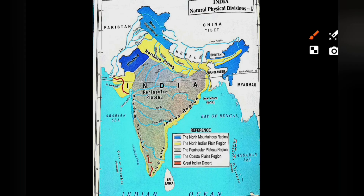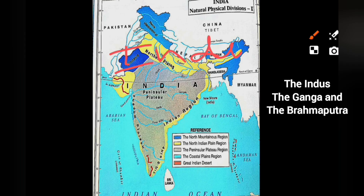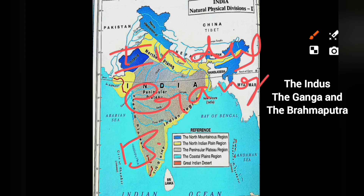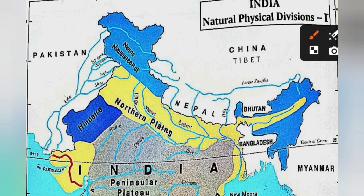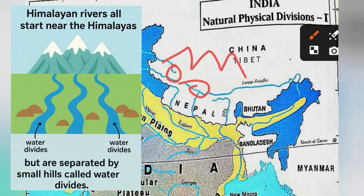The Himalayan rivers are mainly the Indus, the Ganga, and the Brahmaputra. Most Himalayan rivers start from almost the same place, but small hills divide them and keep them on separate paths.